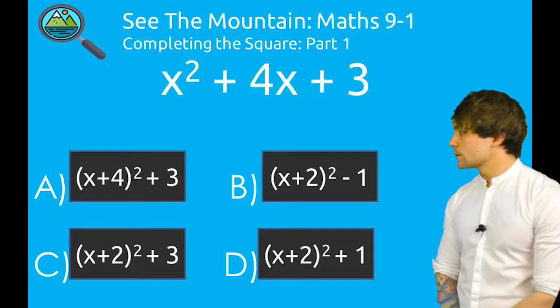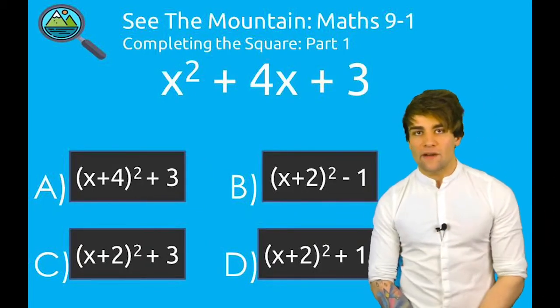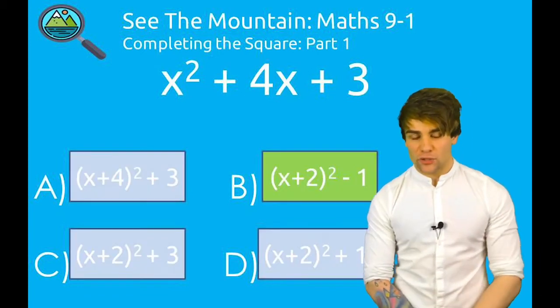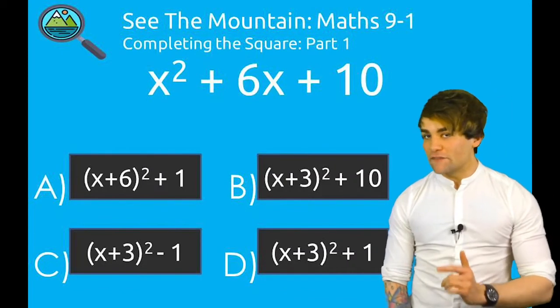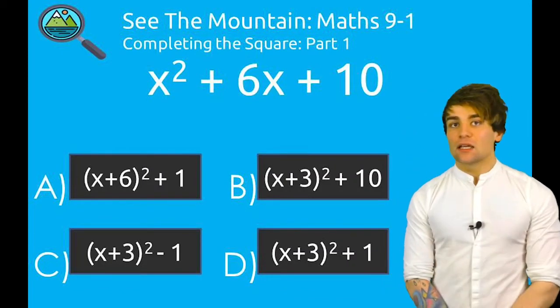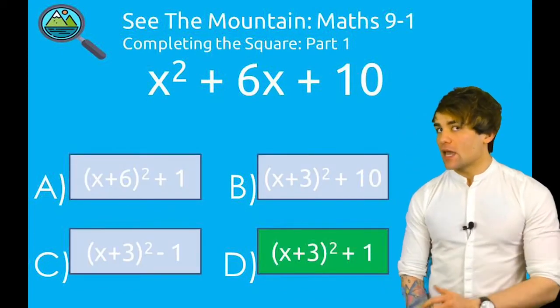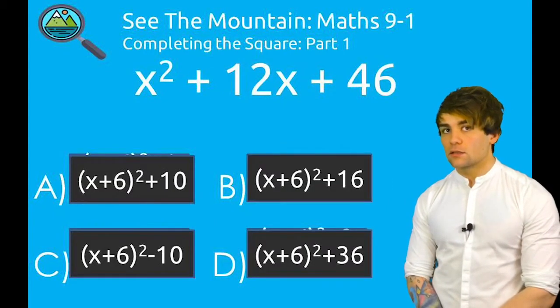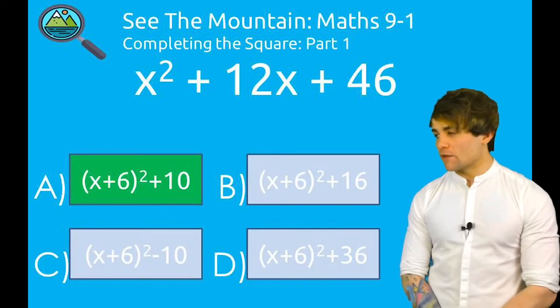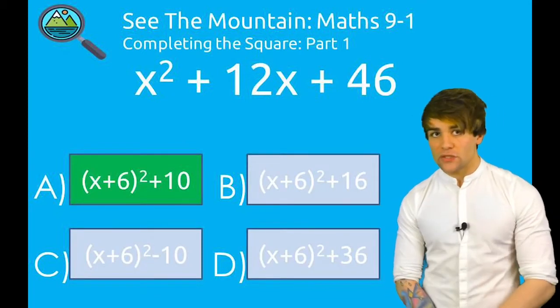Try this one without me. Hopefully you found this one was B. (x + 2)² all squared. Take the 1. Next one. Hopefully you found this one was D. And lastly, x² + 12x + 46. And there we are, halving that 12, (x + 6)² all squared + 10.